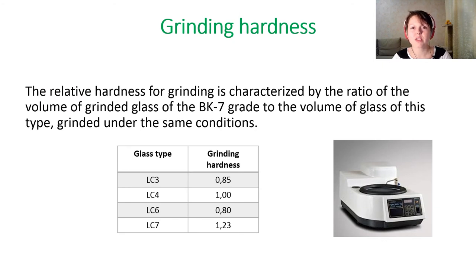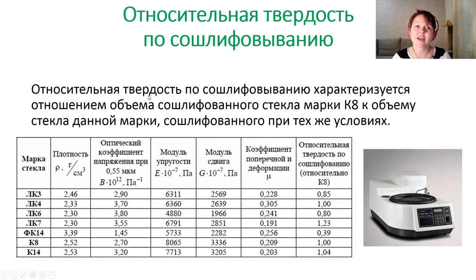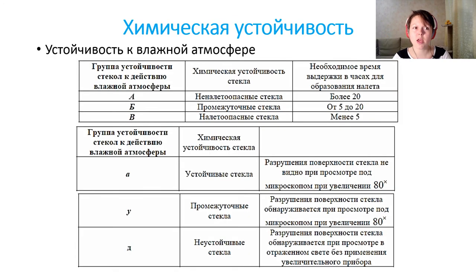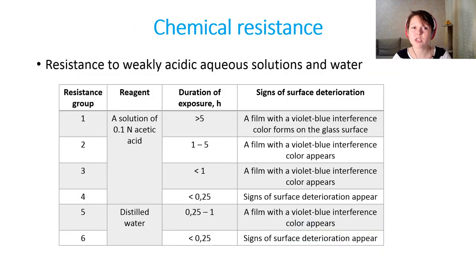We also classify glasses by grinding hardness — the hardness of glasses during grinding. Additionally, the chemical resistance of glasses is standardized: first, resistance to humid atmosphere, which is very important during storage; and second, resistance to weakly acidic aqueous solutions and water, using reagents such as acetic acid solution and distilled water to observe how they affect the glass surface.